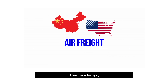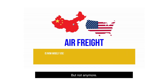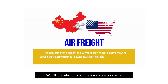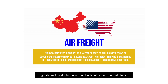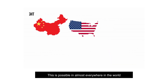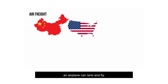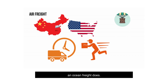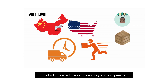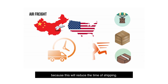Air freight. A few decades ago, traders and shippers rarely used this method due to restraints in safety and capacity. But not anymore — air freight is now widely used globally. As a matter of fact, 52 million metric tons of goods were transported in 2016 alone. Air freight shipping is the method of transporting goods and products through a chartered or commercial plane, possible in almost everywhere in the world as long as there is a route where an airplane can land and fly. One, this is great for cargoes that require fast shipping time. Air freight reaches the destination before ocean freight does. Traders see air freight as a perfect method for low-volume cargoes and city-to-city shipments, reducing the time of shipping.